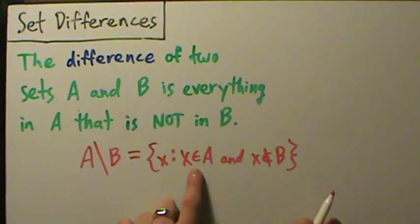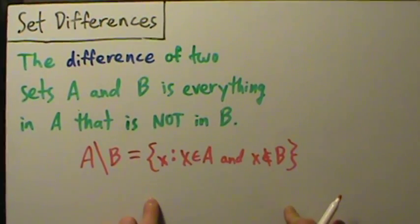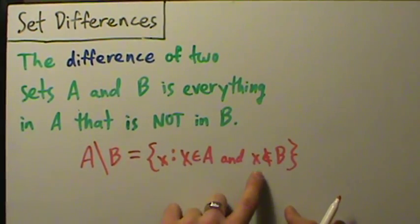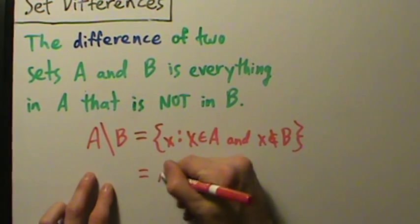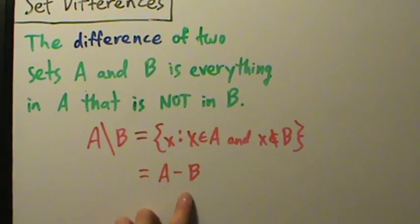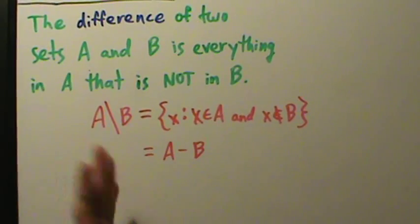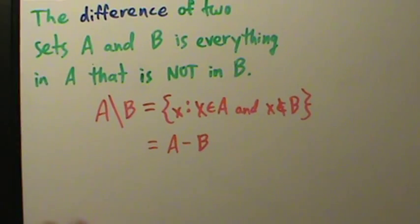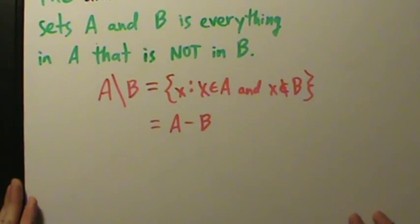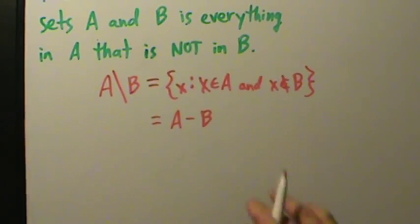Remember the set builder notation and the element-of symbol — we talked about those in earlier videos. A without B is the set of all X such that X is an element of A and X is not an element of B. This is also called A minus B, but I don't really like that notation because we're not really doing subtraction — we're just taking everything in A that's not in B. So I'll use the backslash notation only from now on.